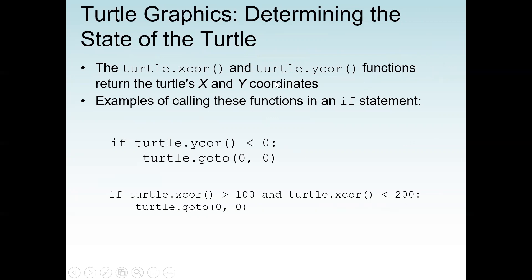An example of calling these functions in an if statement is: if turtle.ycor() is less than zero — meaning it's a negative value — we want the turtle to come back to the original position where x and y are zero, the origin. We use the goto() function to return the turtle to a specific position.